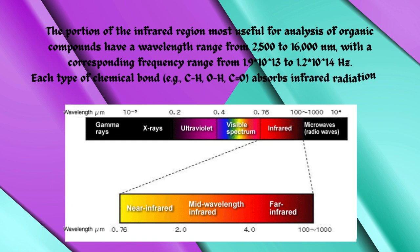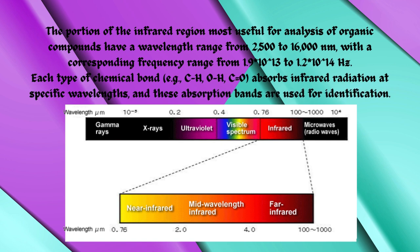Each type of chemical bond, e.g. CH, OH, C equals O, absorbs infrared radiation at specific wavelengths, and these absorption bands are used for identification.